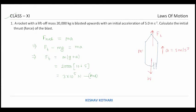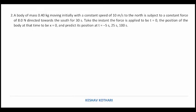Next problem: a body of mass 0.4 kg moving initially with a constant speed of 10 m/s to the north is subjected to a constant force of 8 N directed towards the south for 30 seconds. Find the position of the body at t = 5 s, 25 s, and 100 s respectively. The mass m = 0.40 kg and initial speed is 10 m/s due north.